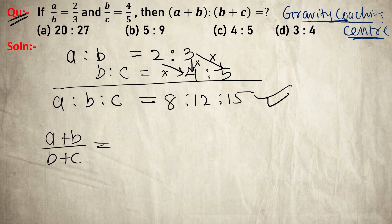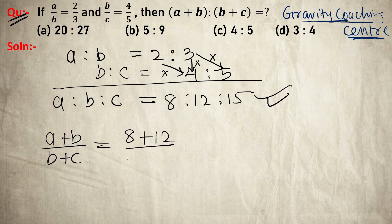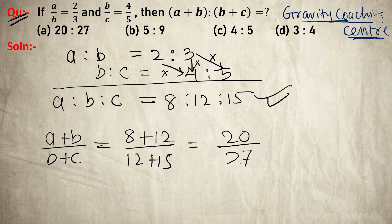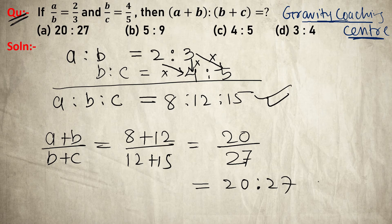So (a+b)/(b+c) equals (8+12)/(12+15) = 20/27, which equals 20:27. This is our required answer, so option A is the correct answer.